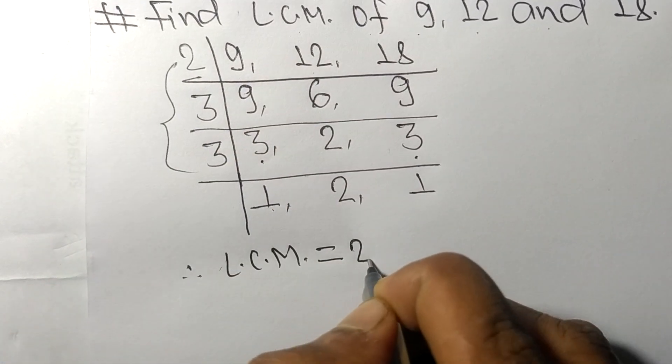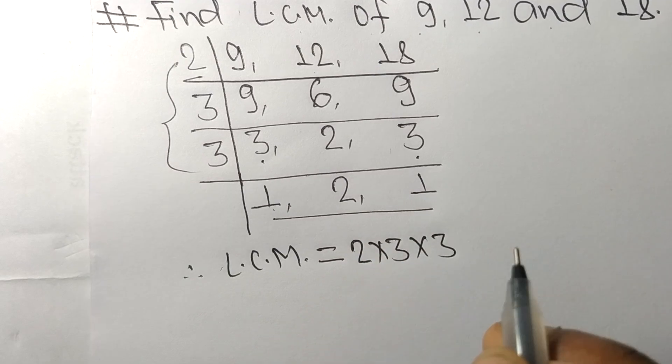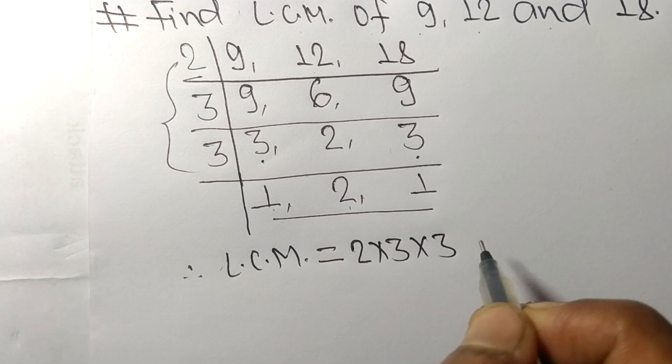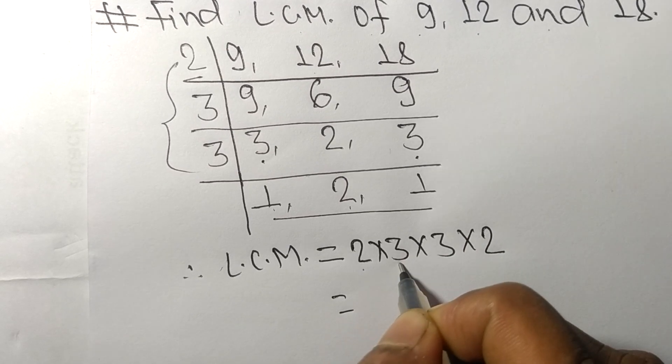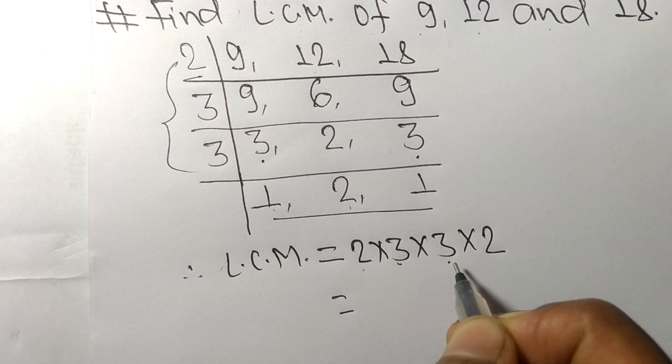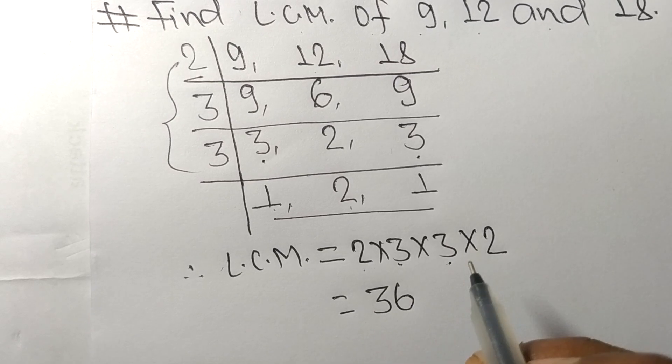So 2 times 3 mean 6, 6 times 3 mean 18, 18 times 2 mean it is 36. So by multiplying all these numbers we got 36.